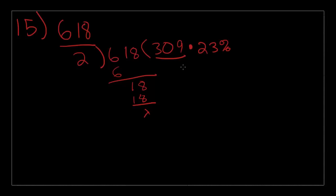Let's analyze why the other choices don't work. Choice B is 23% of 309 divided by 2 — they're not telling you to multiply by half twice; dividing by 2 again just messes it up. Choice C is 22.5% of 618 — that changes the entire percentage. Choice D is 23 over 2 percent of 309 — again changes the percentage. Choice E is not even a percentage; it's 23 divided by 2 times 618.